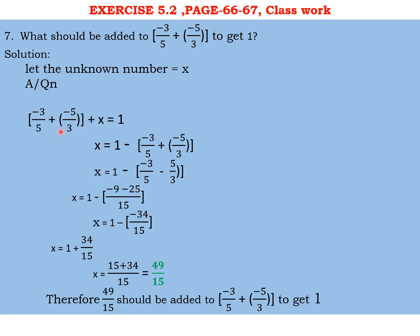On solving, now I am transposing this term. Plus x is equal to 1, so x is on the left hand side. I am taking the other full term on the right hand side. When it will go on right hand side it will be subtracted. When you solve with the proper steps, you will get the answer as 49 by 15. So we can say that 49 by 15 should be added to the given number to get 1.